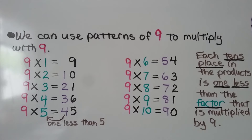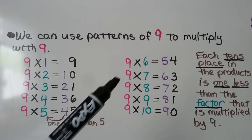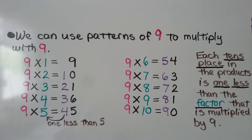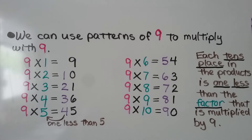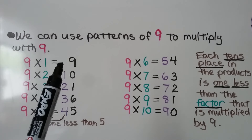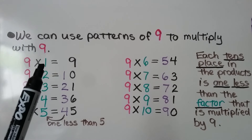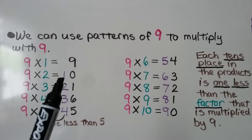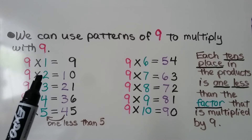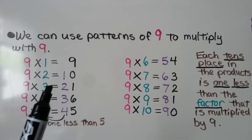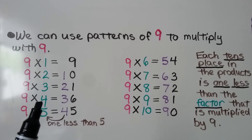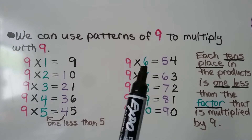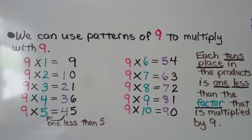We can use patterns of 9 to multiply with 9. Here we have the 9 times table from 9 times 1 all the way to 9 times 10. Each tens place in the products is 1 less than the factor being multiplied by 9. For example, 0 tens is 1 less than 1, 1 ten is 1 less than 2, 2 tens is 1 less than 3, and so on up to 5 being 1 less than 6.